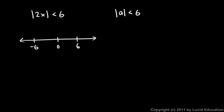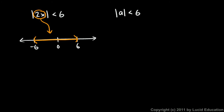Except in this problem, we don't have just a variable like a less than 6 — we have a little expression: 2x. The absolute value of 2x is less than 6. If the absolute value is less than 6, that means it has to be in this region. I'm going to go ahead and graph this, but that is not x — that is 2x. So what I've graphed corresponds to the absolute value of 2x.